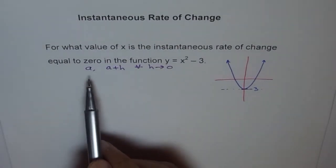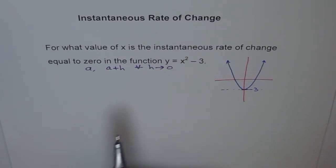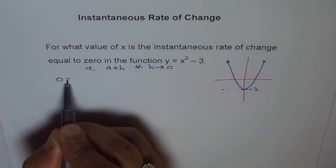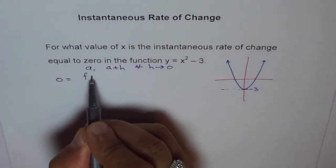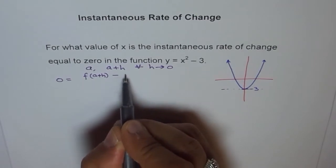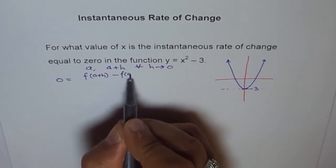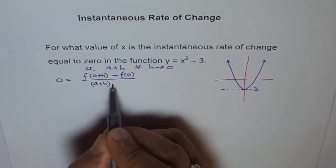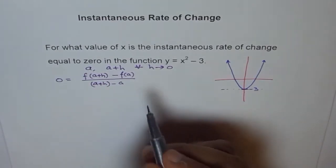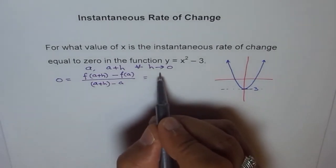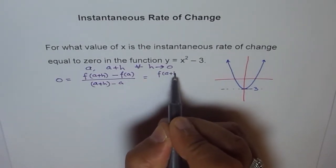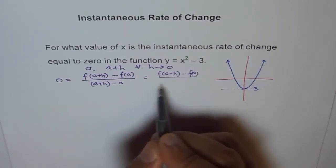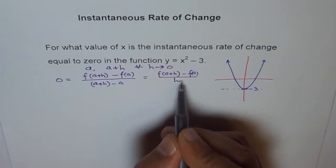So let's assume that point A is the point where the instantaneous rate of change is 0. So we'll equate that, like 0 equals to f of A plus H minus f of A divided by A plus H minus A, which is as good as writing f of A plus H minus f of A over H.